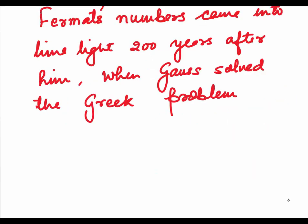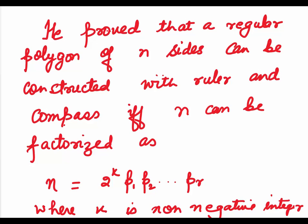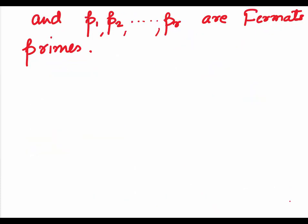Fermat's Numbers came into limelight 200 years after him when Gauss solved the Greek problem. Gauss proved that a regular polygon of n sides can be constructed with a ruler and a compass if and only if n can be factorized as n equals 2 to the power k, P1 into P2 into etcetera PR, where k is a non-negative integer and P1, P2 etcetera PR are all Fermat's primes. This revived the interest in Fermat's primes.